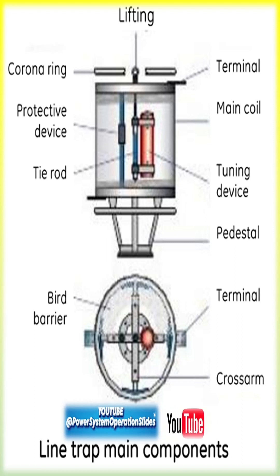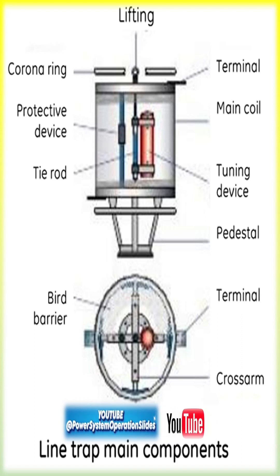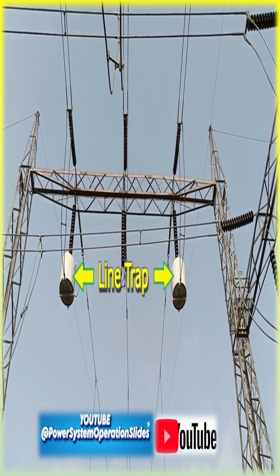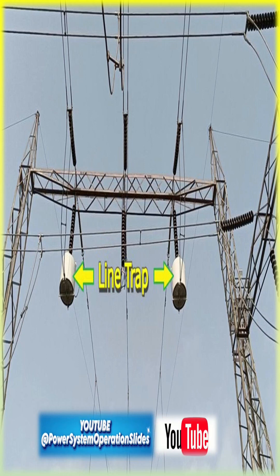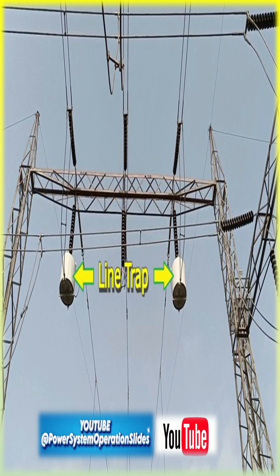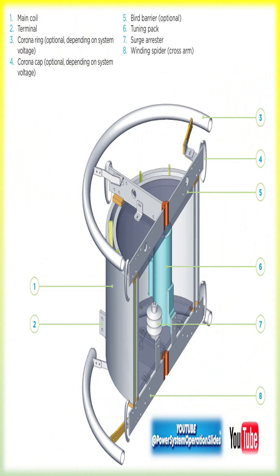The wavetrap acts as a band-stop filter or a high-frequency choke. It blocks the high-frequency communication signals from passing into unwanted parts of the network — such as transformer windings, busbars, or adjacent lines — where they could get dissipated or cause disturbances. That's why we use wavetraps.